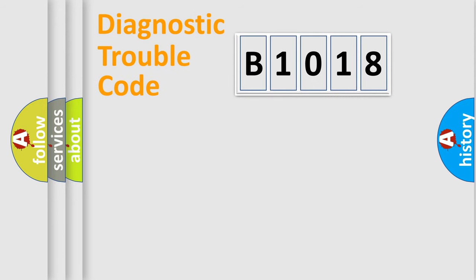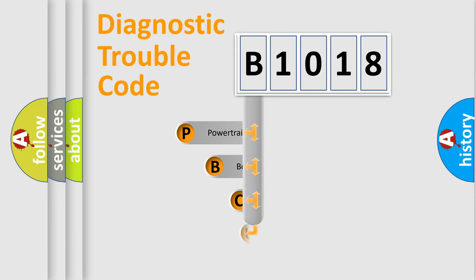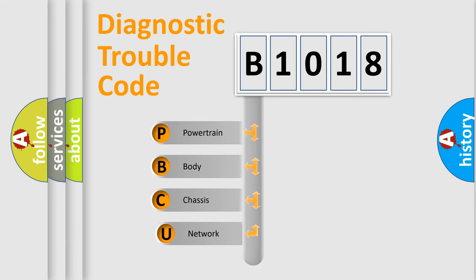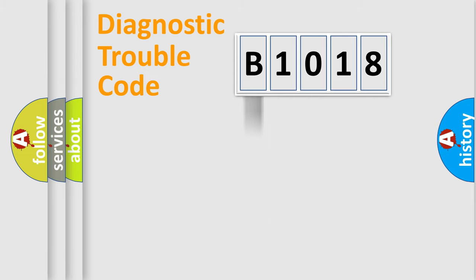Let's do this. First, let's look at the history of diagnostic fault code composition according to the OBD2 protocol, which is unified for all automakers since 2000. We divide the electric system of the automobile into four basic units: Powertrain, Body, Chassis, and Network.